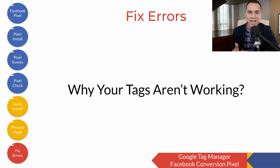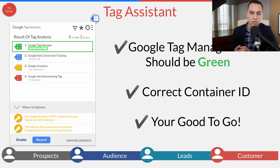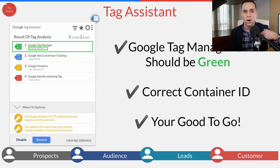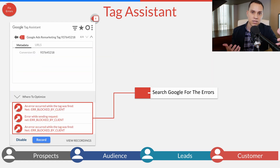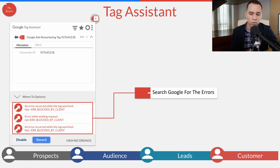Some other areas you might run into issues with are other tags on your site. If you're using Google Tag Assistant and trying to figure out why some tags aren't working — green and blue means it's good to go, and red and yellow means you should probably Google search what's going on. Click on the tag to see error codes at the bottom, and then Google search them. You'll be able to figure out in five or ten minutes what is actually going on.